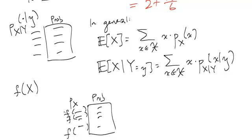For example, I could end up with two rows that have the same label, in which case I would combine those two rows and add the probabilities. That's how I come up with the probability table for f of X.